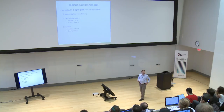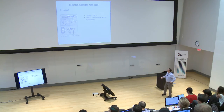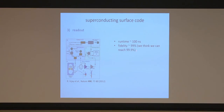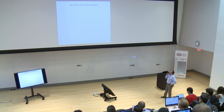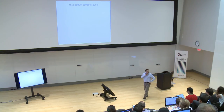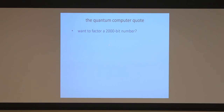We can also check the readout: measuring syndrome qubits with fidelities of between 90 and 99% is well sufficient. At this stage, superconducting qubits are, in my opinion, the only platform meeting the minimum requirements for quantum error correction. We are on a good track. To close with a concrete quote: factoring a 2,000-bit number in 24 hours would require approximately 500 million physical qubits — that is the overhead reality of these codes, but we believe we can scale up to reach that goal.